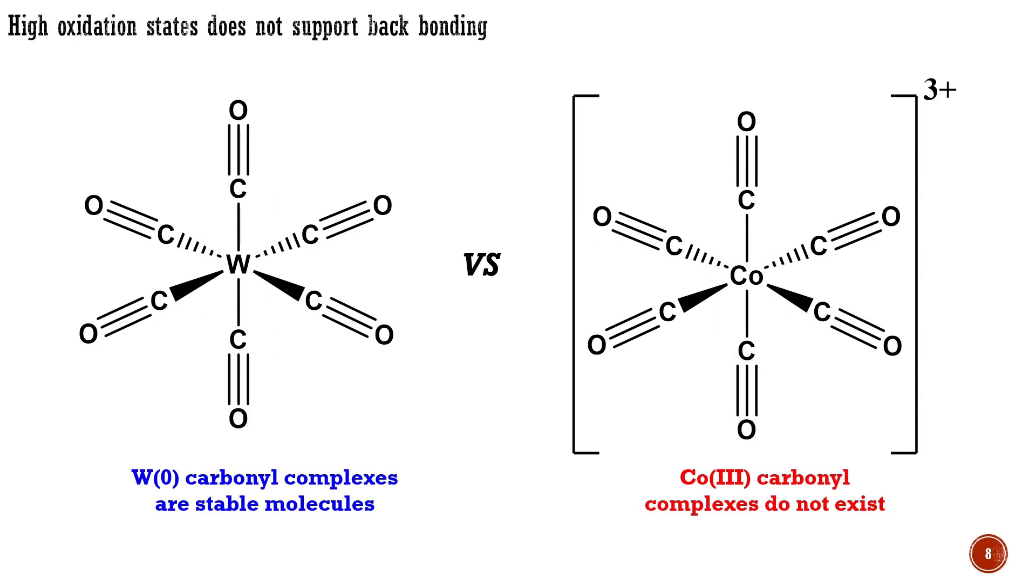The d-orbitals of transition metals are only fully available for back donation in low-oxidation states. Although cobalt-3 does have filled d-orbitals, it is unavailable for backbonding. Cobalt-3 therefore cannot bind carbon monoxide. The high positive charge of cobalt-3 contracts all the orbitals with the result that the d-orbital is low in energy and therefore cannot support backbonding.